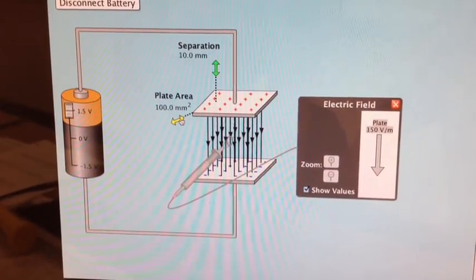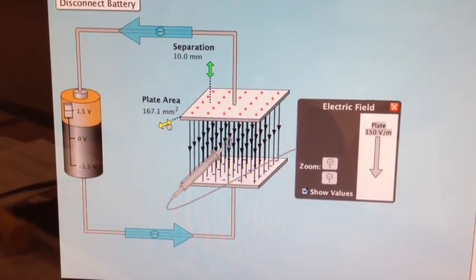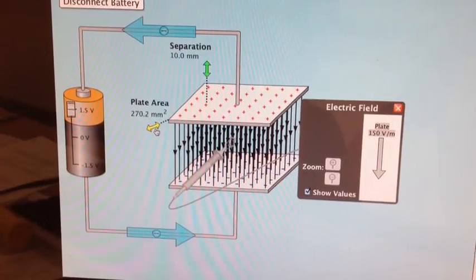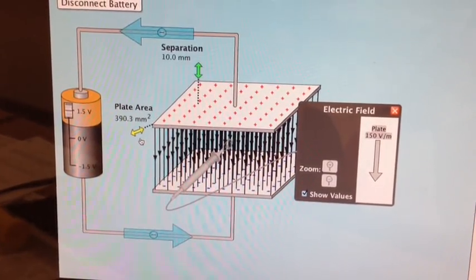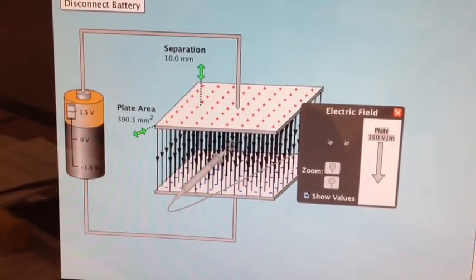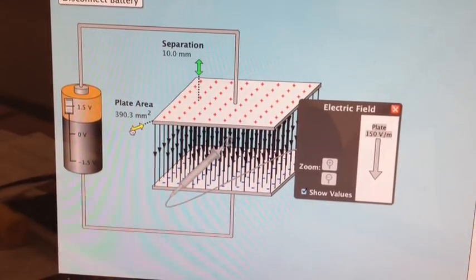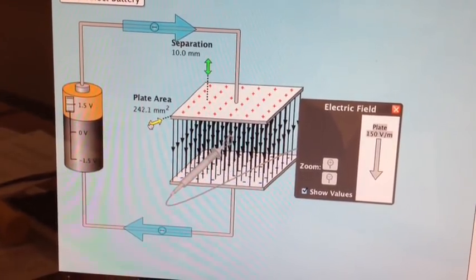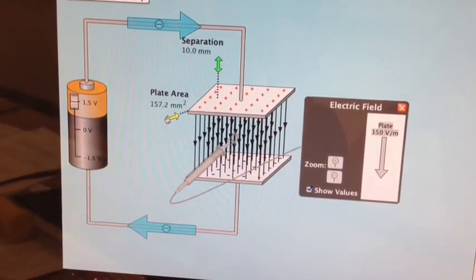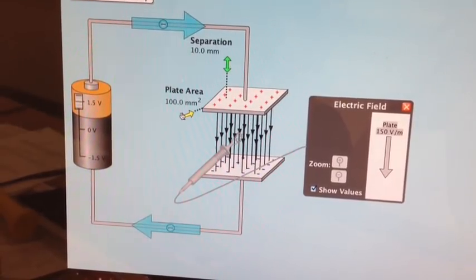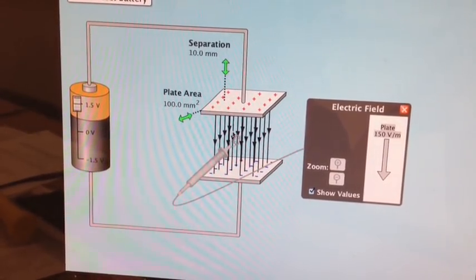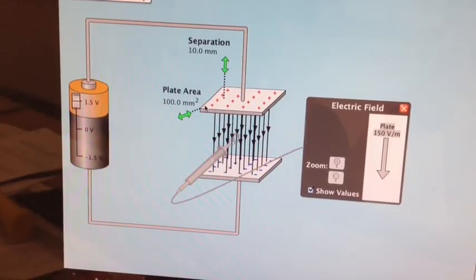So let's check out area and electric field. You can see that when I increase the area, the electric field stays at 150 volts per meter. And the reason is, the lines of the electric field are not getting any closer together. There's less total lines, but the electric field is based on how far apart the lines are, and that doesn't change.